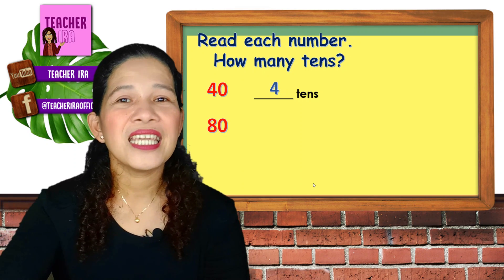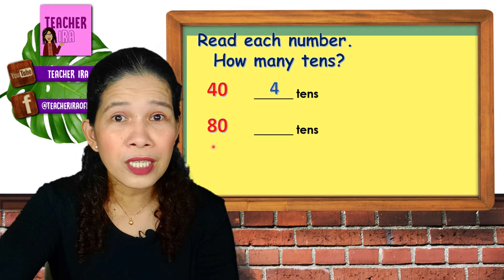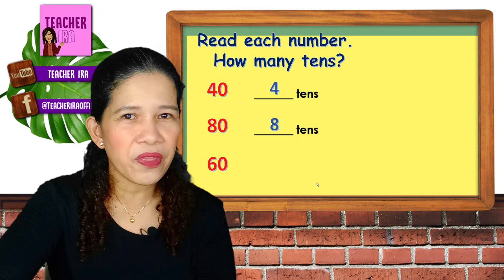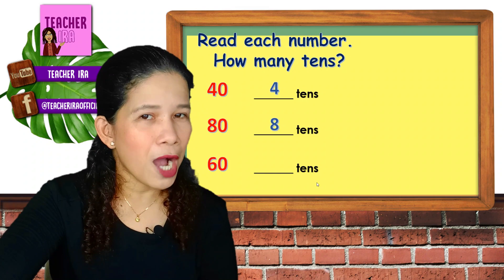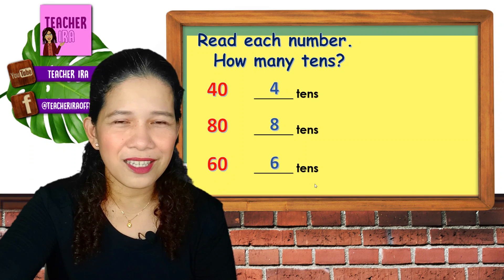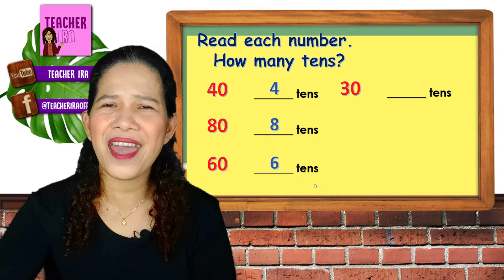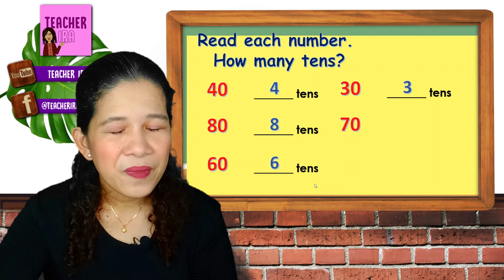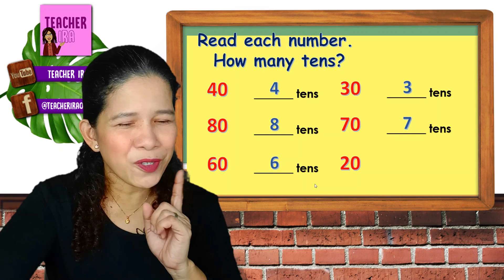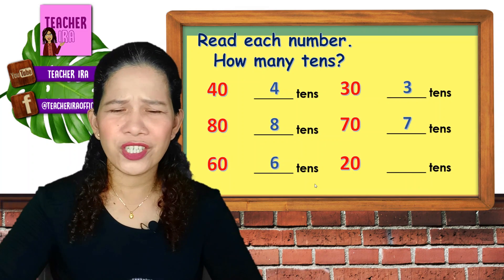How about the next number? This is number 60. How many tens are there in 60? You are really smart, children — that's 6 tens. How about this number? Number 30 — how many tens? You got 3 tens there. How about this number? Yes, 70 — how many tens? You are correct again, you got 7 tens. How about this last one? Number 20 — how many tens are there in 20? Very good, that's 2 tens.